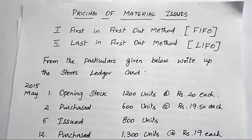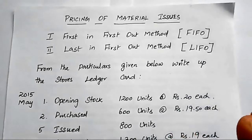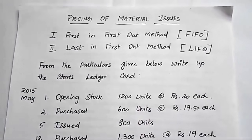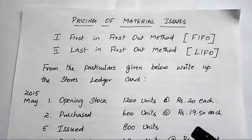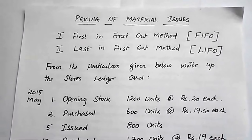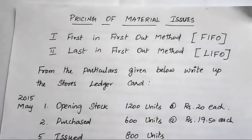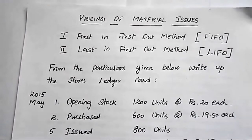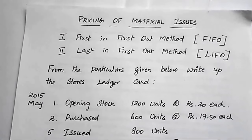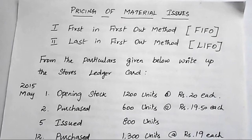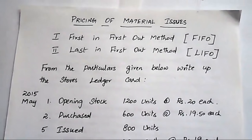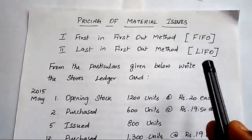We need to ascertain the exact cost of material issued to the production department. It is the duty of the storekeeper to record all information about units or raw materials purchased from different suppliers. Whenever they receive any units from a supplier, they make entries in chronological order, and after receiving a material requisition form from the production department, the storekeeper issues the material.